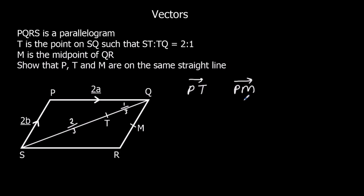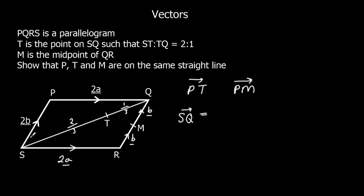Let's work out P to T and P to M. We know that SR must be the same as PQ — that's 2a, because opposite sides of a parallelogram are equal. M is the midpoint, so R to M is b and M to Q is also b, because the whole line QR is 2b. We should also work out S to Q: S to Q is 2b plus 2a.